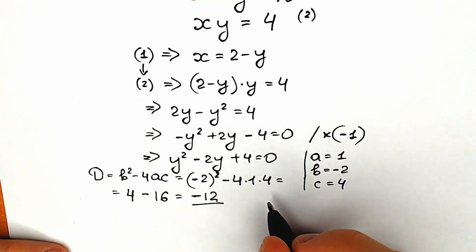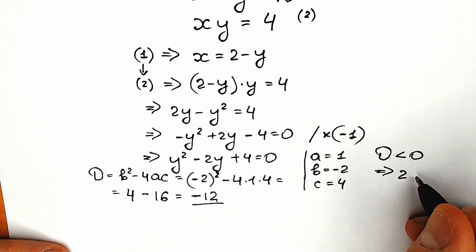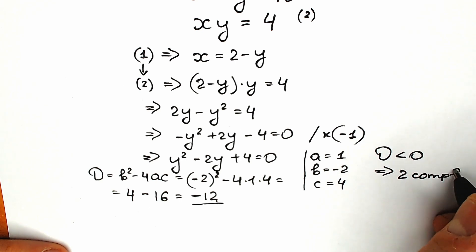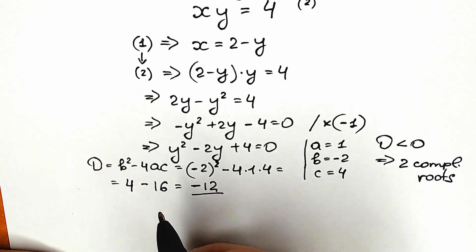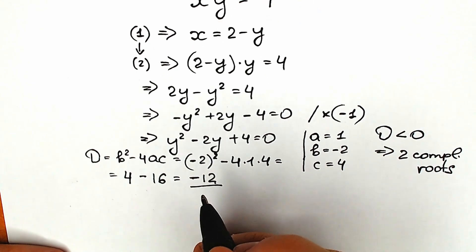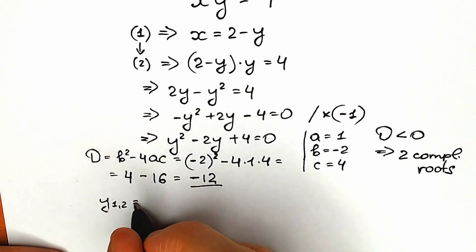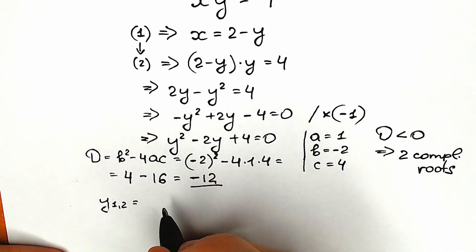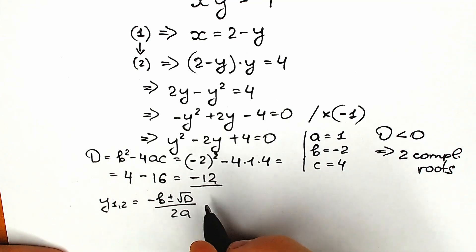When the discriminant is less than 0, it implies we have two complex roots. Let's find them. Using the quadratic formula, y equals (minus b plus or minus square root of D) all over 2a. So we have minus(minus 2) plus or minus square root of minus 12, all over 2 times 1.